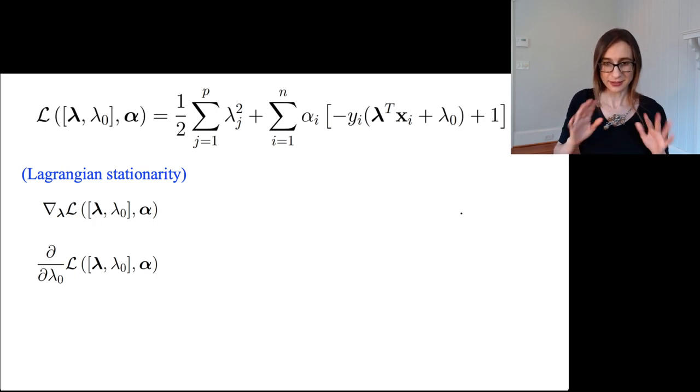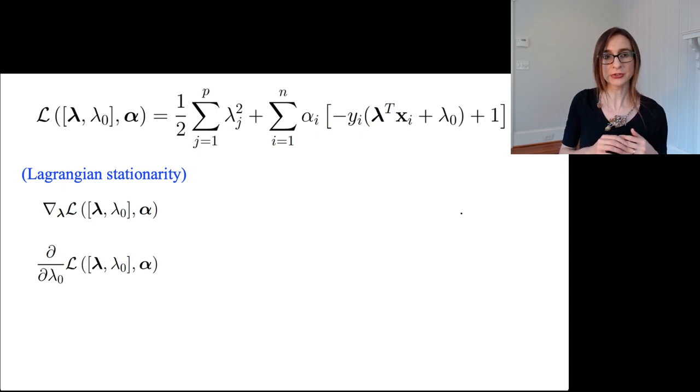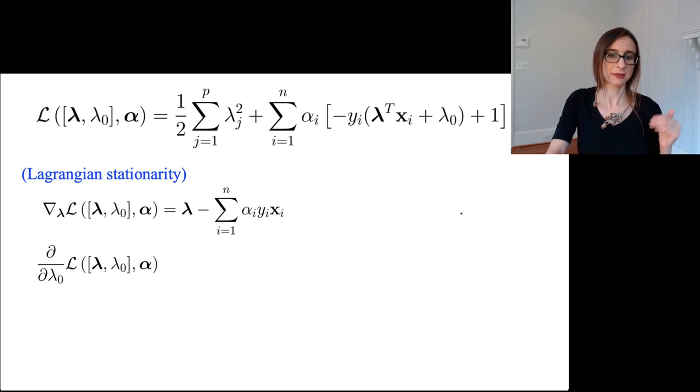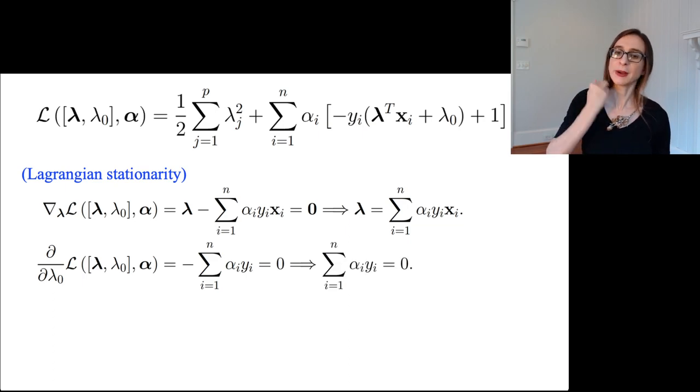The other thing I have to do is take the partial derivative of the Lagrangian with respect to lambda_0, then set all these things equal to zero. So I have these two very powerful equations that are going to help us out a lot.